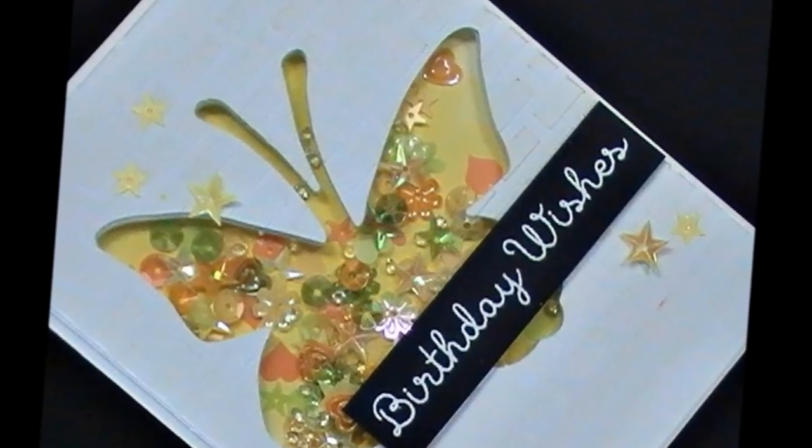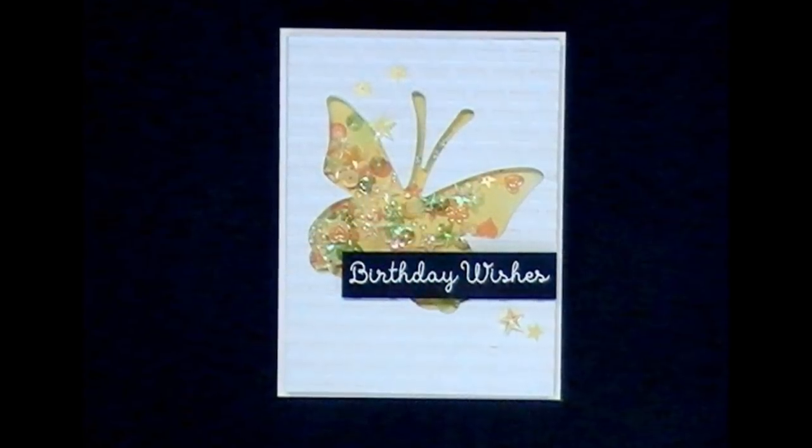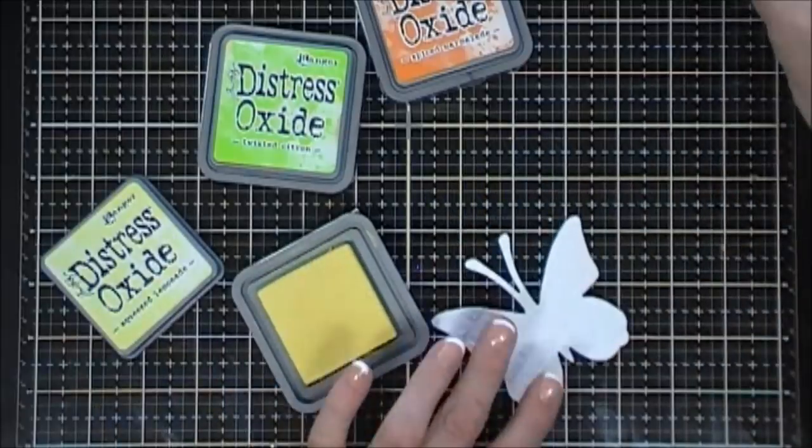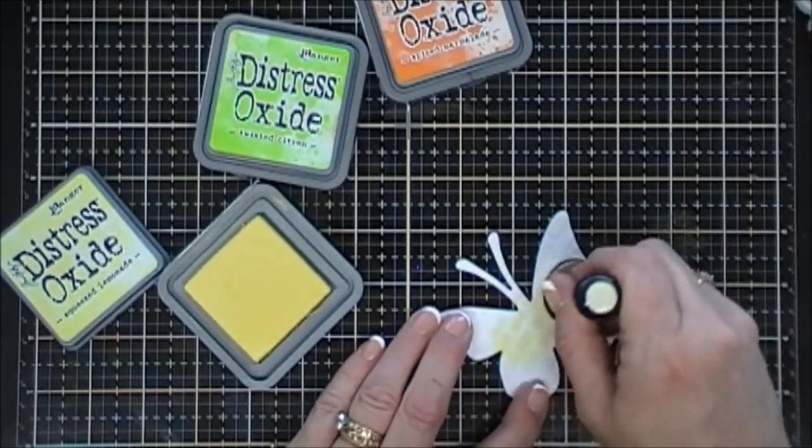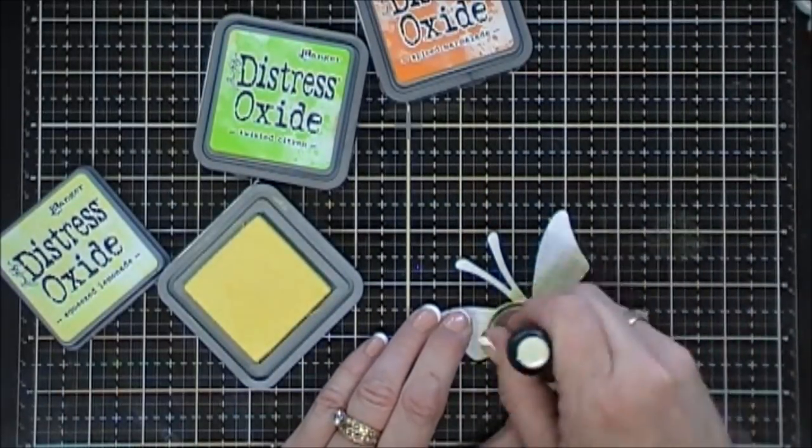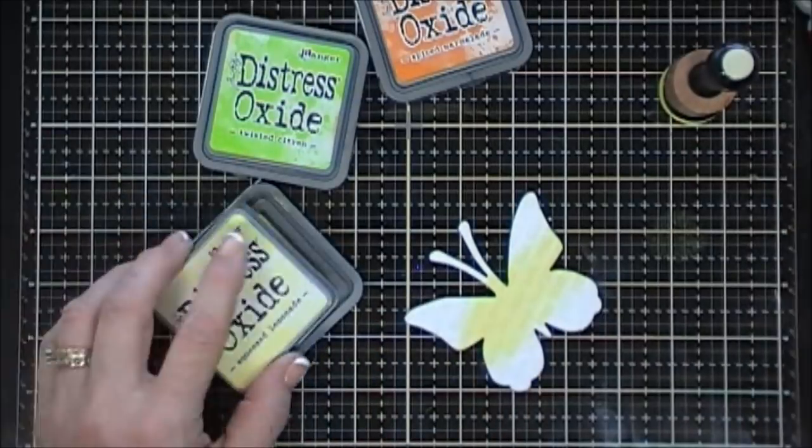But here's some close-ups. Okay, now we're going to use the negative piece of our butterfly. And again, I thought we could go over the top of it with some more distress oxide ink. I'm going to start off with Squeezed Lemonade.